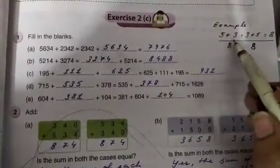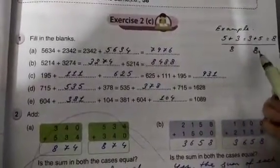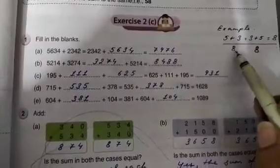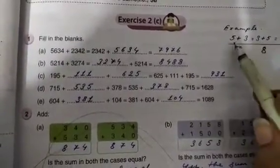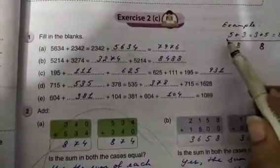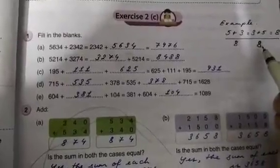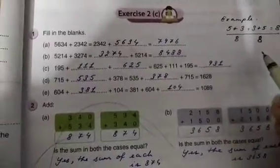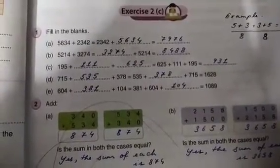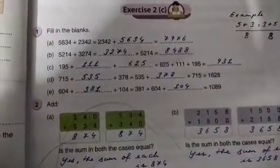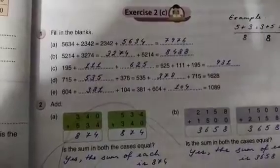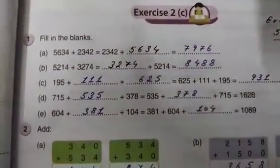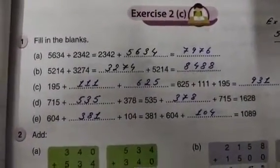So, 5 plus 3 will give you 8 and 3 plus 5 will also give you 8. The places are just interchanging, nothing else. 2 plus 3 will give you 5 and 3 plus 2 will also give you 5. Both are the same. Only the places are interchanging. In this exercise also, we are going to do the same thing.